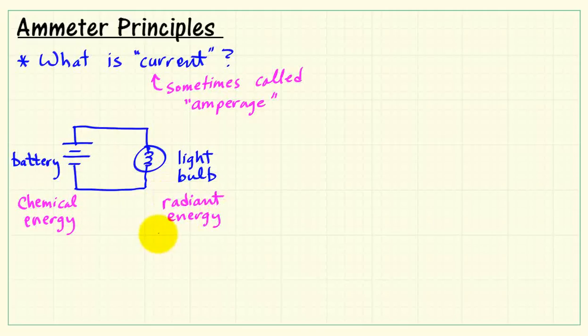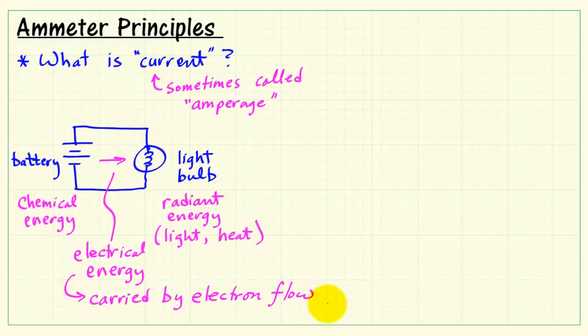We have chemical energy in the battery that ultimately ends up as radiant energy, which is light and heat. Somewhere between those two we have electrical energy that transfers energy from the battery to the light bulb. So we really have three different forms of energy associated with this circuit.